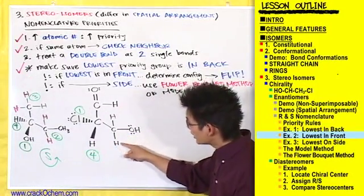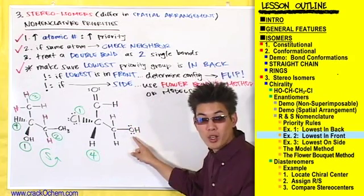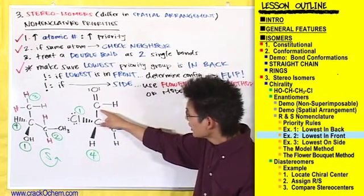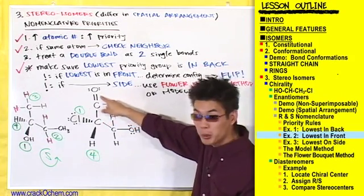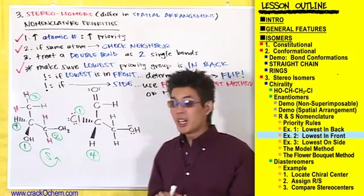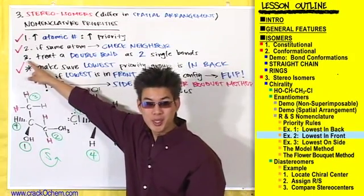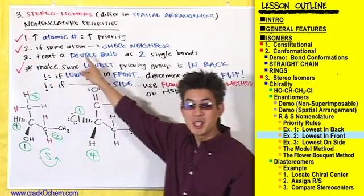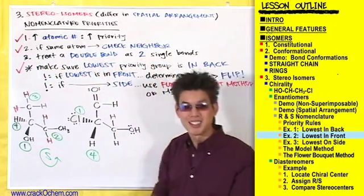We see that this carbon is bonded to two hydrogens and one oxygen, whereas this carbon is bonded to one hydrogen and double bonded to an oxygen. We get to use rule number three here, which says to treat a double bond as if it were two single bonds.